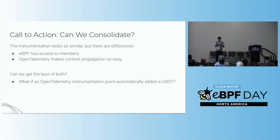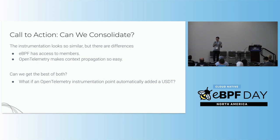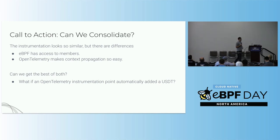There are some real differences between them: with eBPF you have easy access to different struct members if you know how to navigate them, while OpenTelemetry has the advantage of context propagation. But the question for us as a community is: if you're going to go through the effort of instrumenting your code, can we get the best of both worlds? Maybe if you instrument with OpenTelemetry, you automatically get that USDT for free? Is there something we can do to make this more unified?